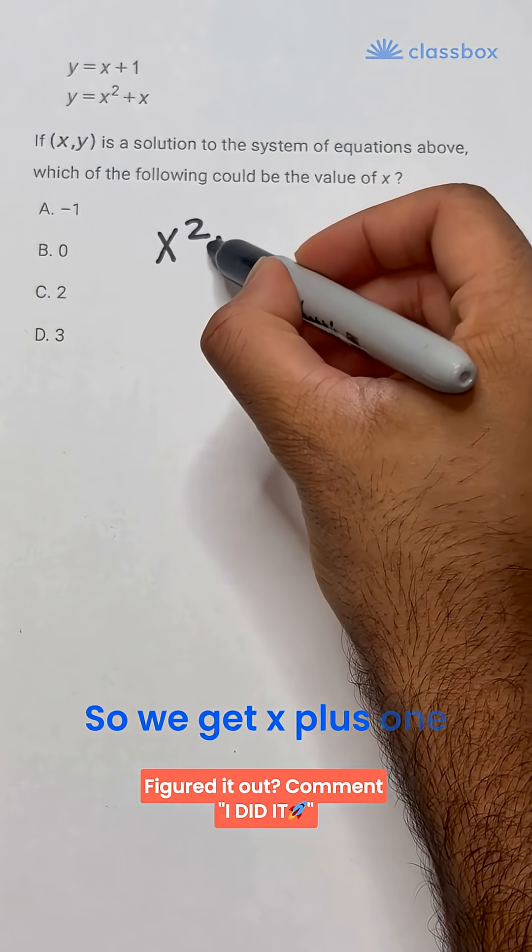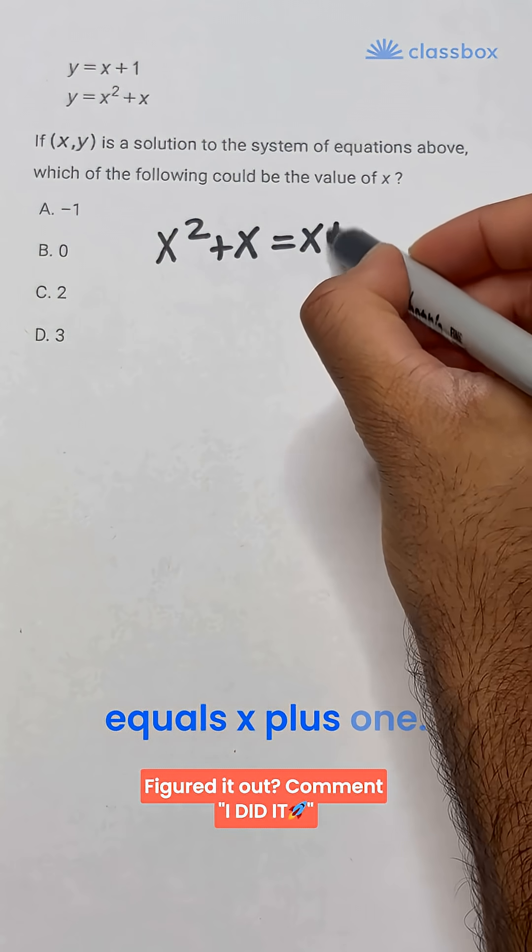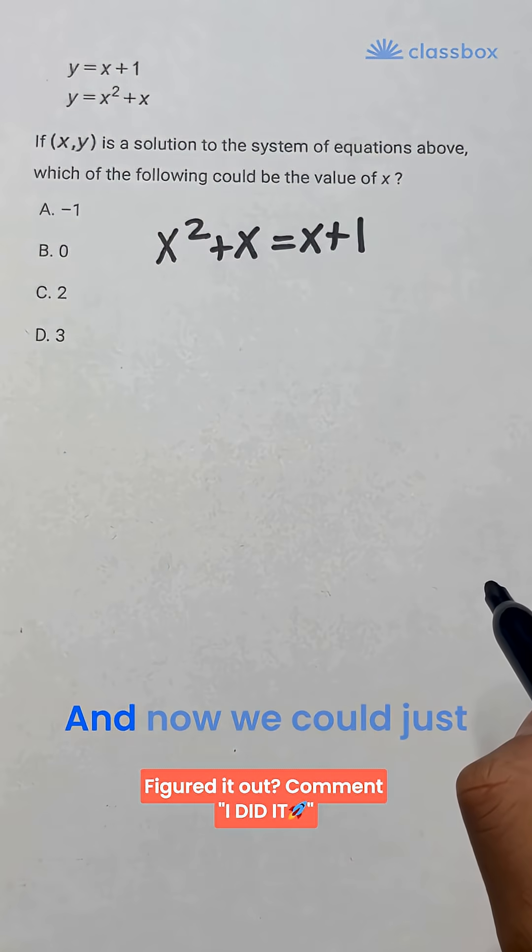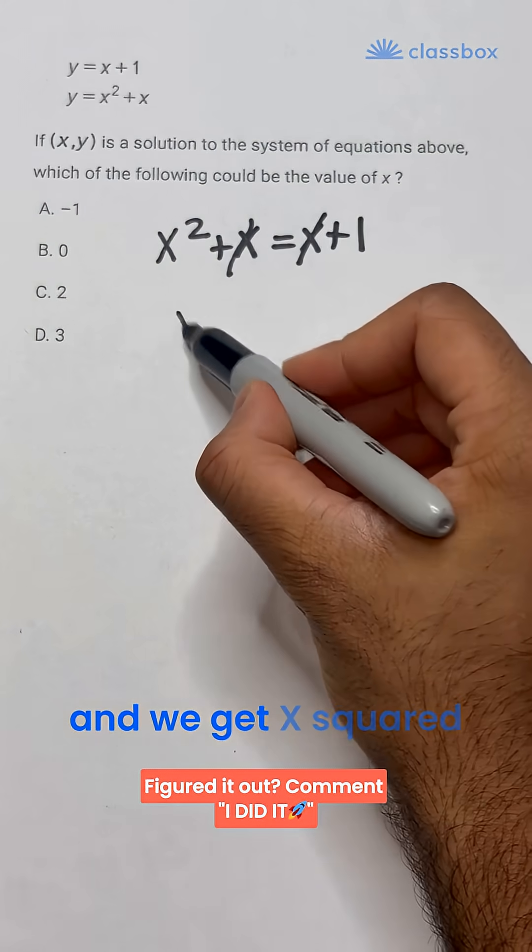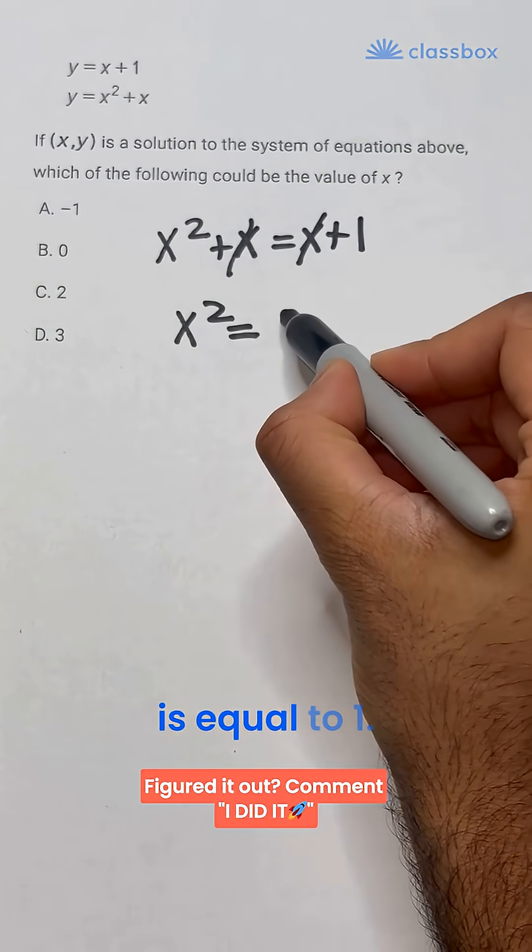So we get x squared plus x equals x plus 1. And now we could just cancel out the x's by subtracting both sides by x, and we get x squared is equal to 1.